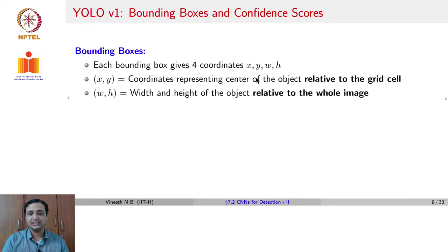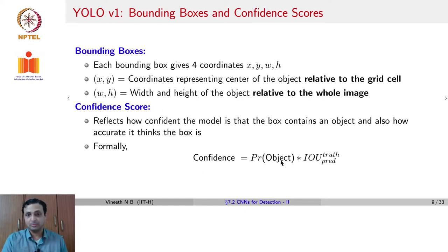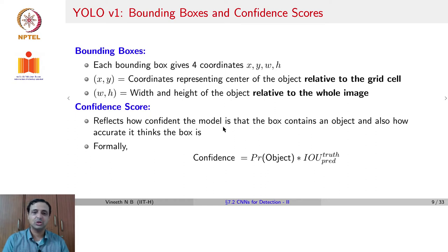Each bounding box gives four coordinates x, y, w, h. x and y are the coordinates representing the center of the object relative to the grid cell, while w and h are the width and height of the object relative to the whole image. The confidence score given for each bounding box reflects how confident the model is that the bounding box contains an object and how accurate the box is. You can view the confidence as the probability of an object — any object — multiplied by the intersection over union of the ground truth with the predicted box. Confidence thus takes into account both of these quantities.